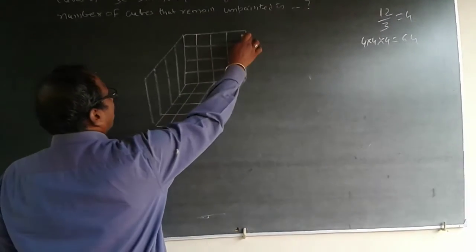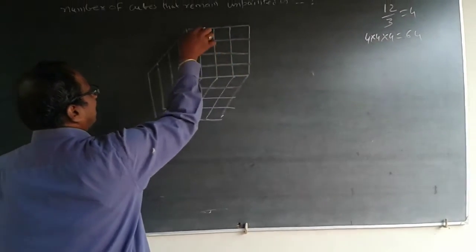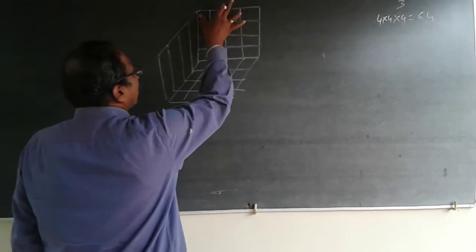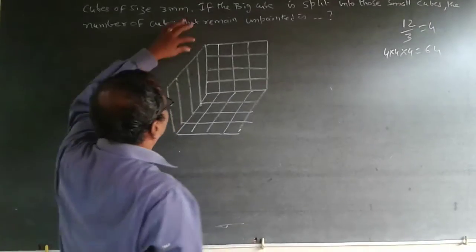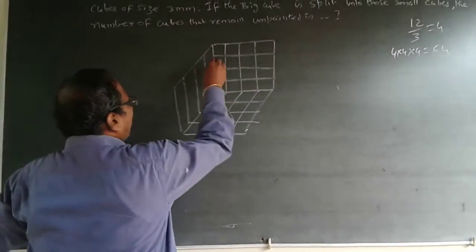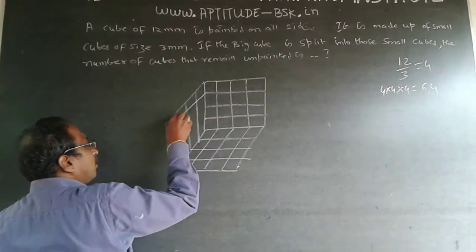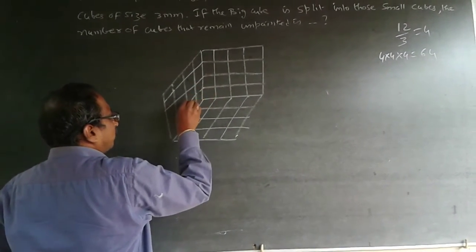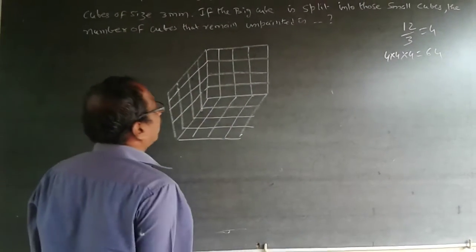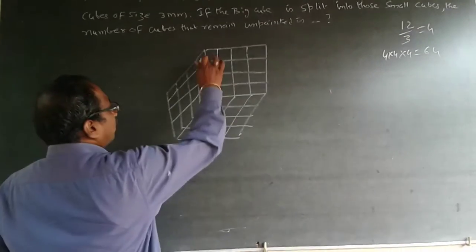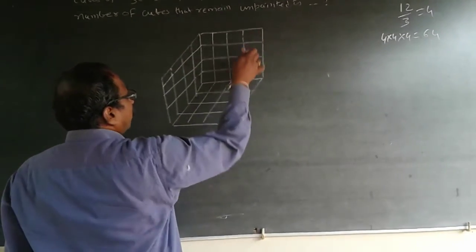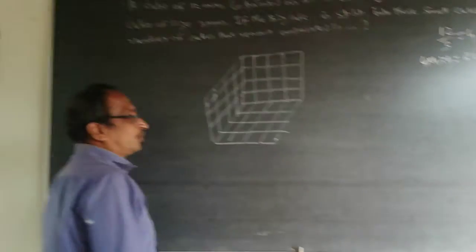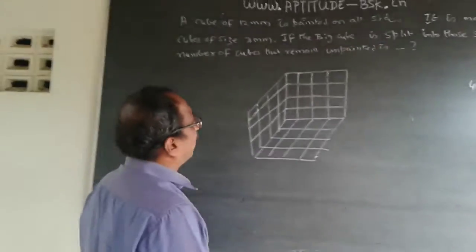The entire cube is 12mm, being divided into cubes of 3mm — so 1, 2, 3, 4 — and 4 × 3 will be 12. So these are all smaller cubes. I will have 4 × 4 × 4: this side is 4, this side is 4, so 4 × 4 will be 16 pieces, and 16 × 4 will be 64 smaller pieces. There will be 64 smaller pieces.